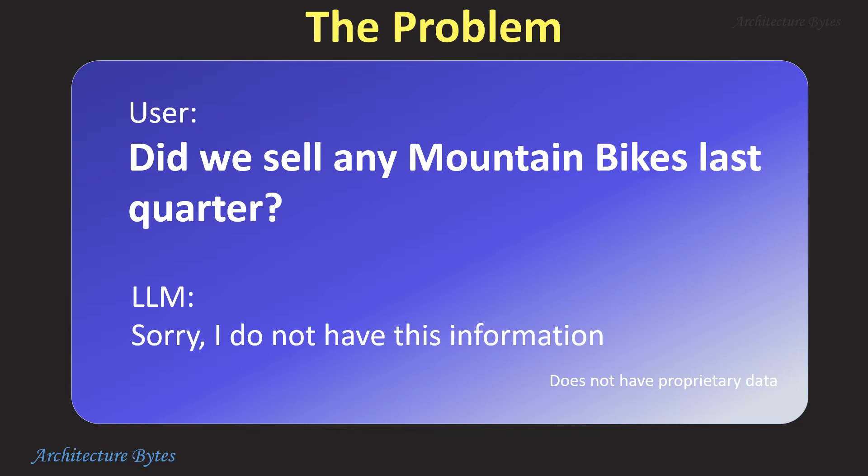Here is another question a business user may ask: 'Did we sell any mountain bikes last quarter?' The LLM cannot answer this question — it simply does not have this information. Therefore, our goal is to augment the LLM so that it can respond with information that it has not yet been trained on.